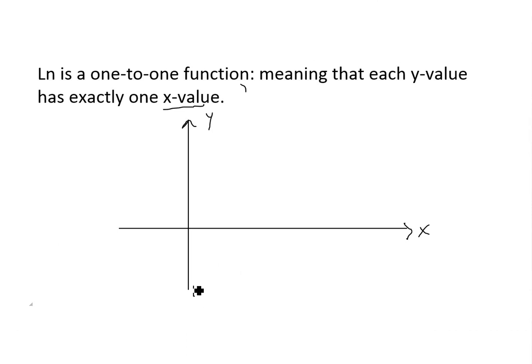For example, when we look at the ln function, it looks something like this right here. So every y value, if you go here, has only one x value. It's not like a trigonometric function that goes up and down where you could have multiple x values.